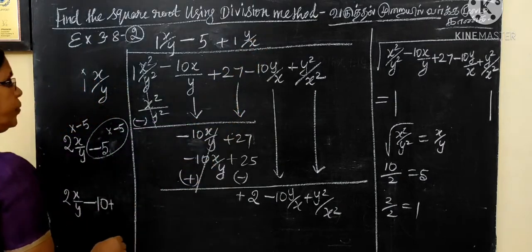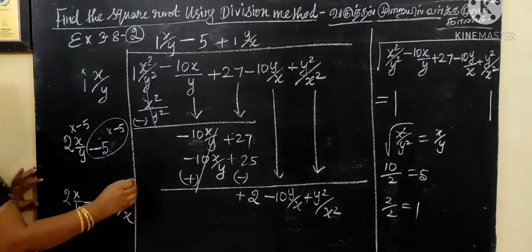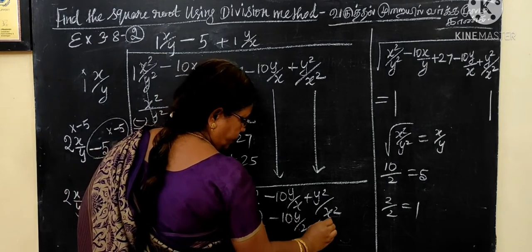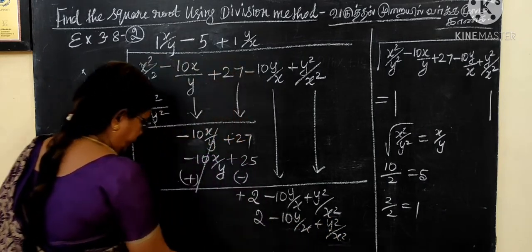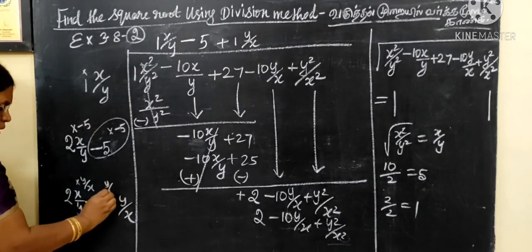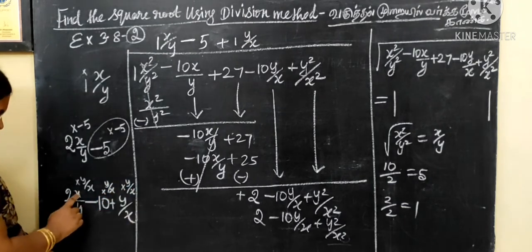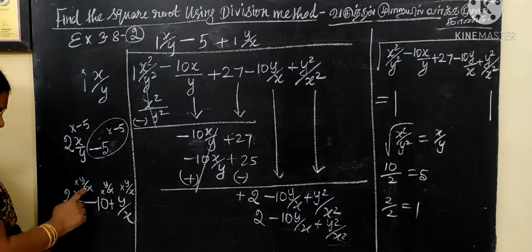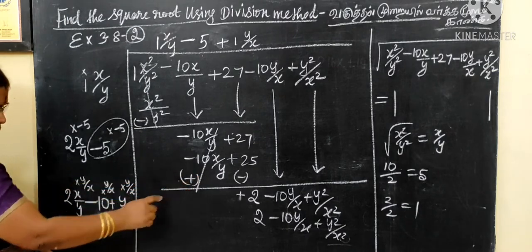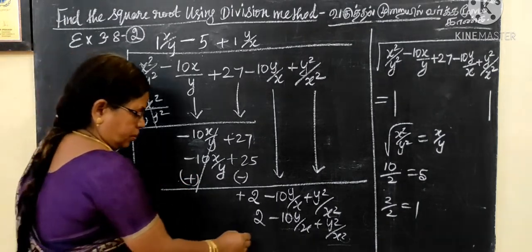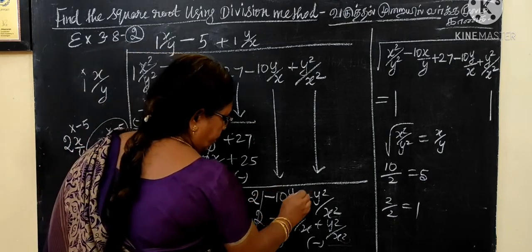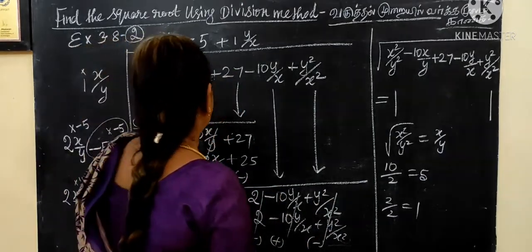We call y squared by x squared. Then we call y by x. If we call this answer and multiply, we call it y by x. When y by x is called, y is cancelled and x is cancelled. Then 10y by x. y into y, y squared, x into x, x squared. Now this is the answer. The answer is here.